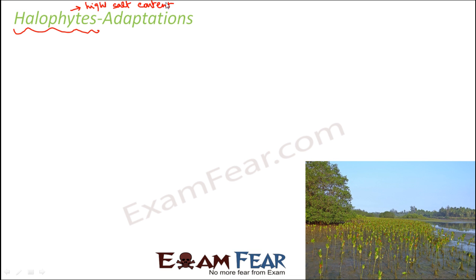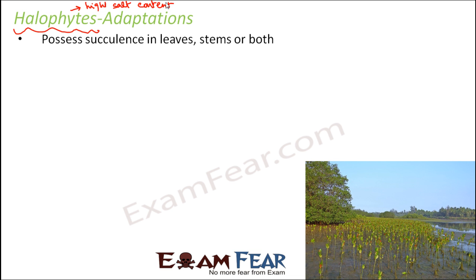It is quite amazing that in these habitats — muddy and marshy areas with less water — certain plants are very well able to survive and grow. Their first adaptation is that they possess succulents in leaves, stems, or both. Succulence is a phenomenon where parts of the plant have cells of larger size so that these large cells can store water.